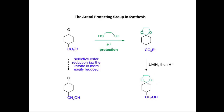All that remains now to complete the synthesis is conversion of the Cyclic Acetal back to the Ketone. Under acidic hydrolysis conditions, I can deprotect the Cyclic Acetal to give my Ketone, and so I now have my target molecule.